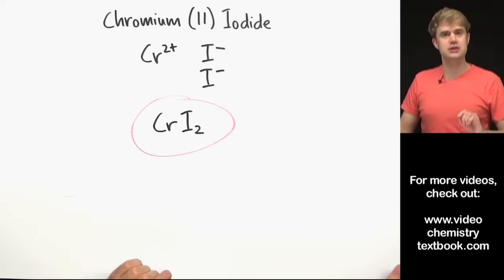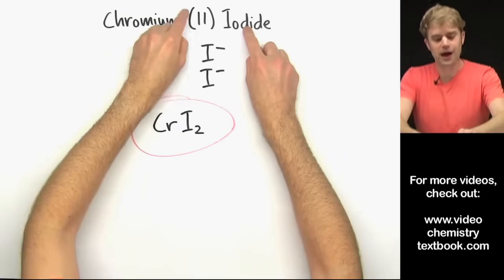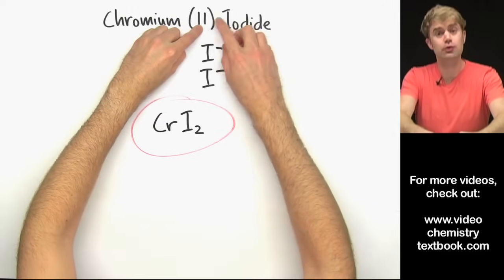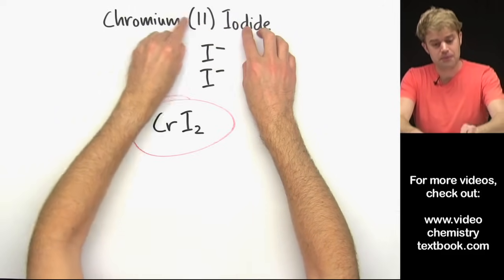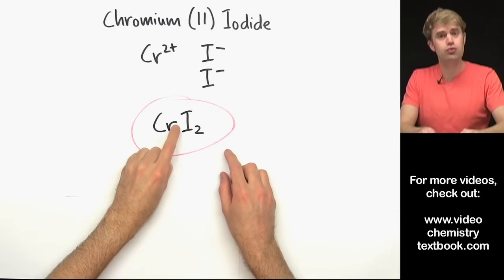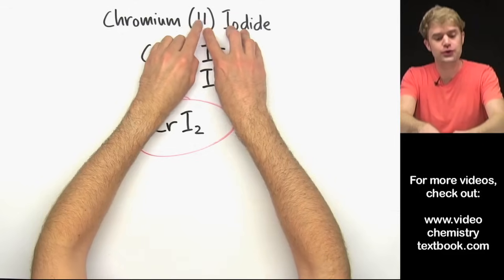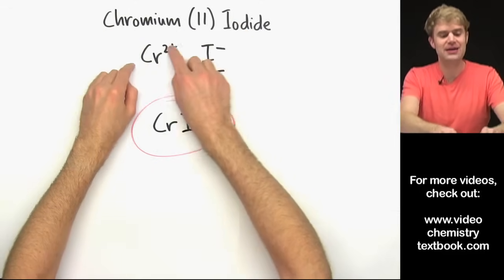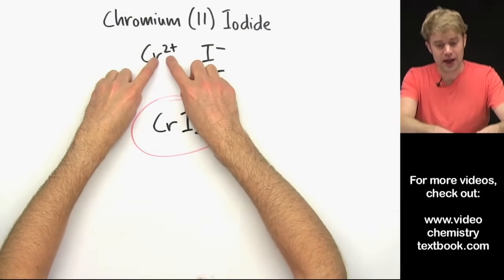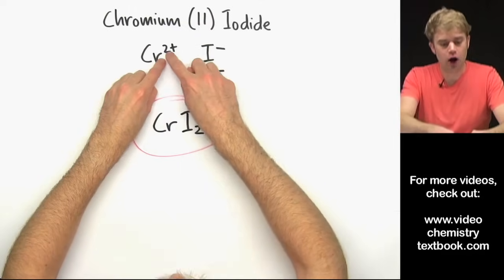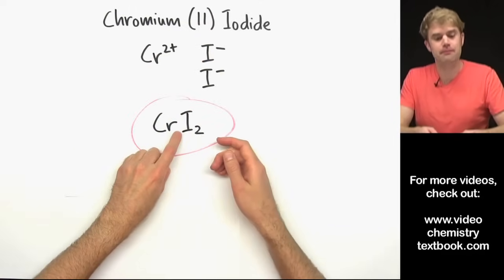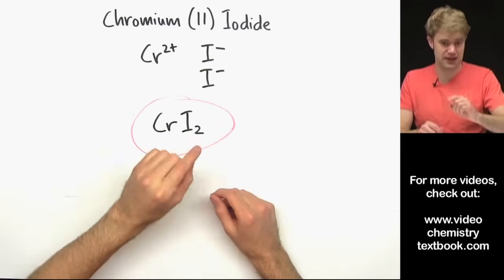Now here is a misconception that I want you to be careful of. A lot of people see this 2 in Roman numerals and they think that this means there should be 2 chromiums in the formula. That's not true. This Roman numeral 2 means that chromium has a 2 plus charge. It's talking about the charge of the ion, not the number that you have. So be careful of that.